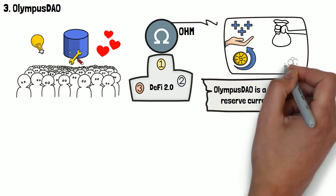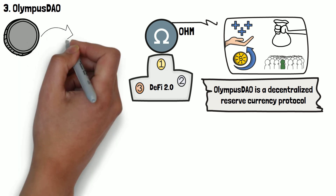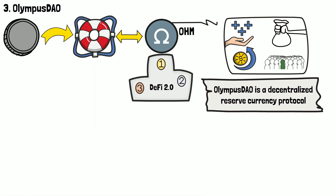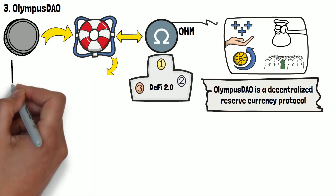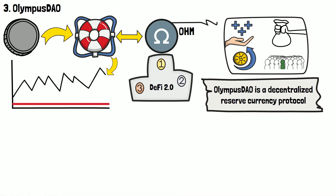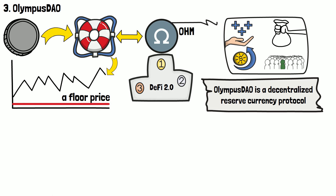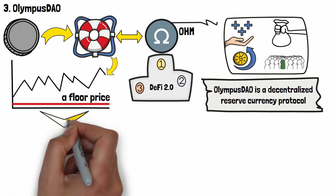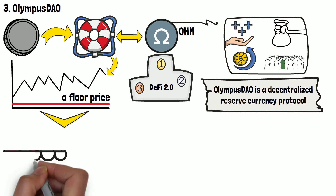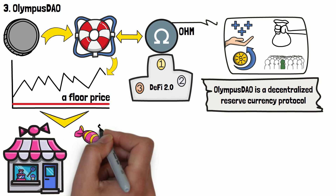The OHM token is actually what makes Olympus stand out from the crowd. Each OHM token is backed by a selection of cryptocurrency assets. This establishes a ground price for the token — in other words, OHM has a certain price threshold, or a floor price, which theoretically shouldn't be crossed. Imagine the same candy store mentioned earlier — a candy bar in the store is priced at $1.